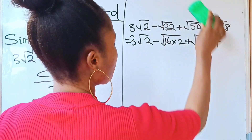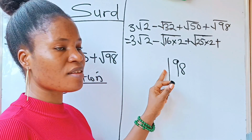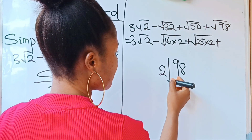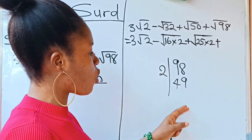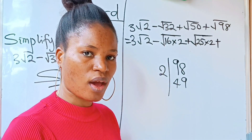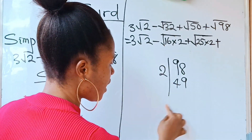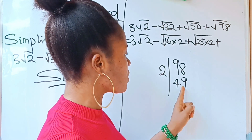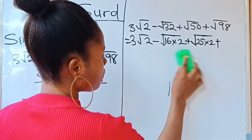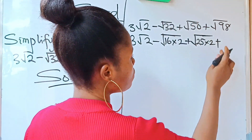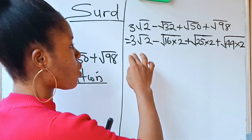For root 98: the smallest number that can divide 98 is 2. Dividing gives us 49, and I stop here because 49 is a perfect square — root 49 is 7. So 2 times 49 gives 98, and I replace root 98 with root 49 times 2, which gives us 7√2.